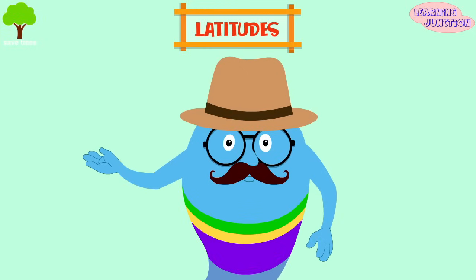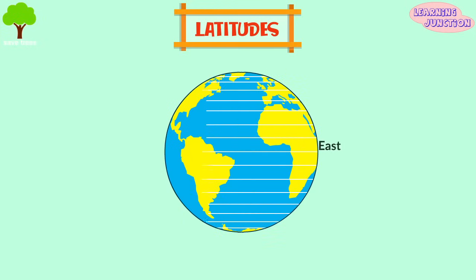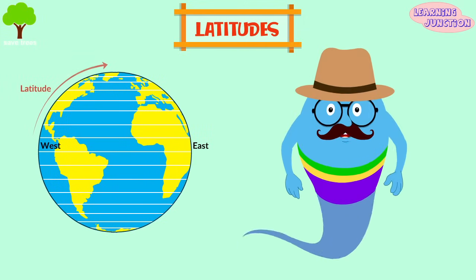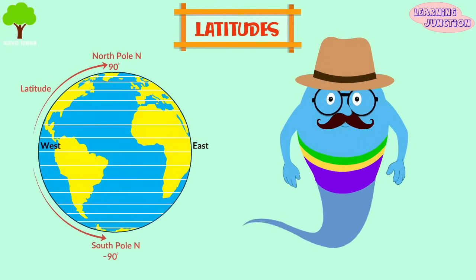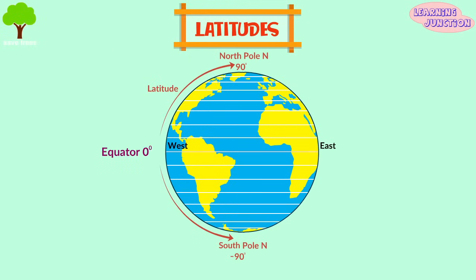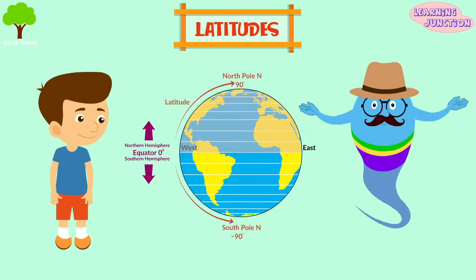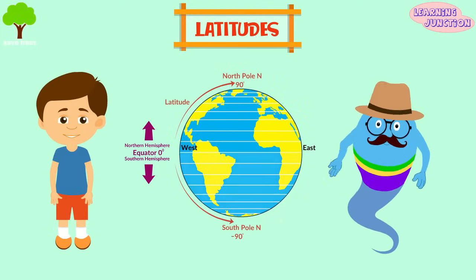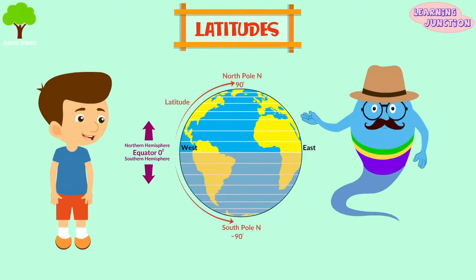First, latitudes. Latitude lines circle the globe in an east-west direction. It measures how far north or south a specific point lies from the equator. They're also known as parallels. The equator at zero degrees separates the Earth into the northern and southern hemisphere. Locations to its north lie between zero degrees north and 90 degrees north, while to its south the positions are between zero degrees south and 90 degrees south.